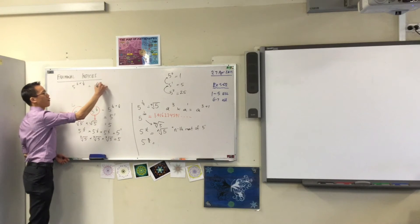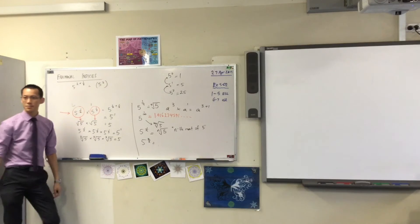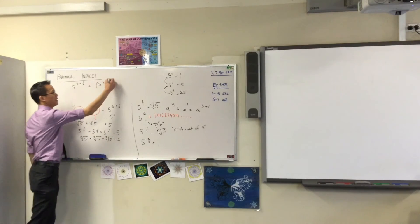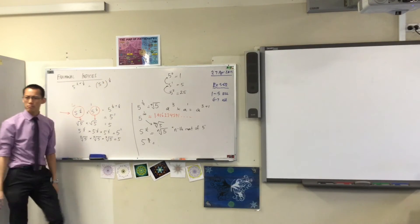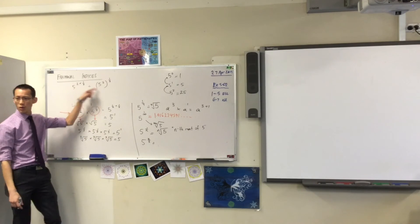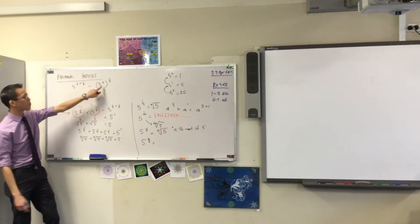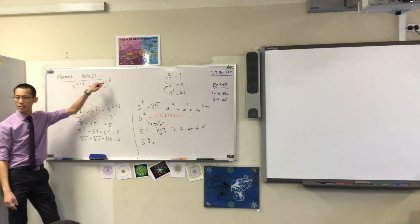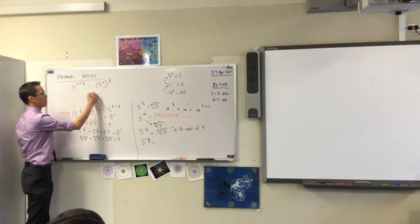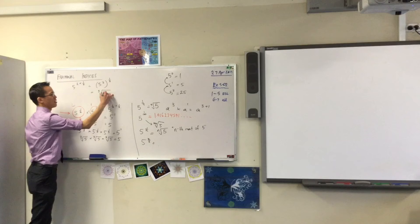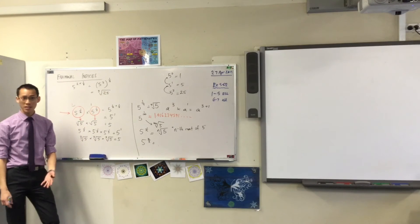I can write it as five squared to the power of a third. Does that make sense? Do you see? This is a law that you've been using already. When you've got brackets, you just multiply those powers together. So that's the cube root of 25. Does that make sense?